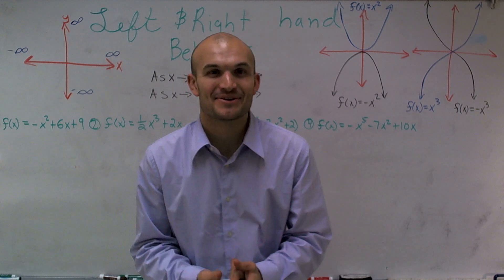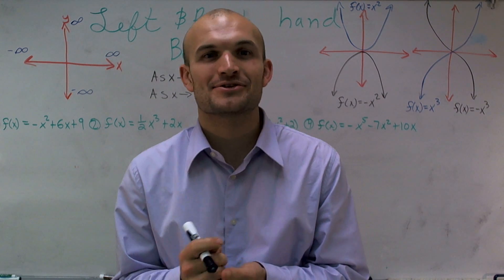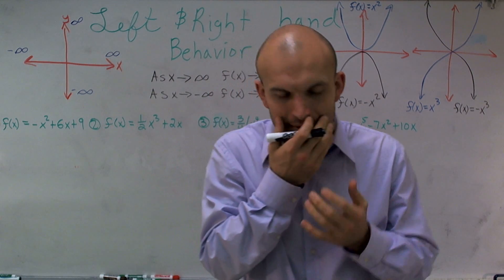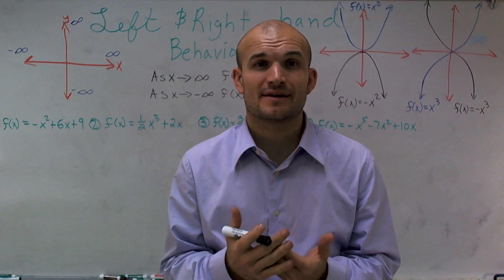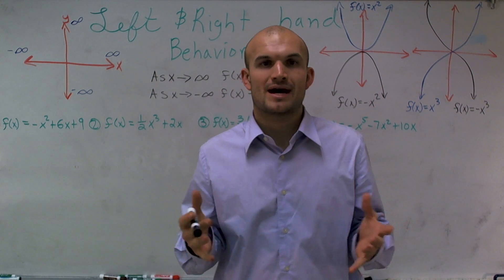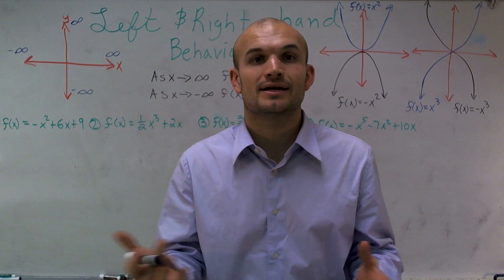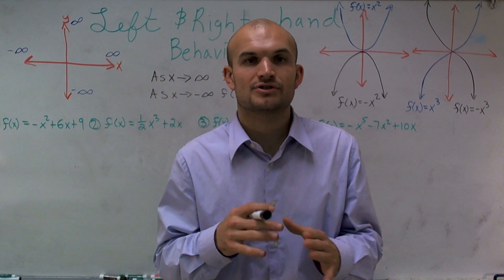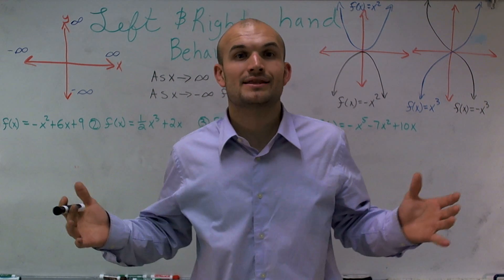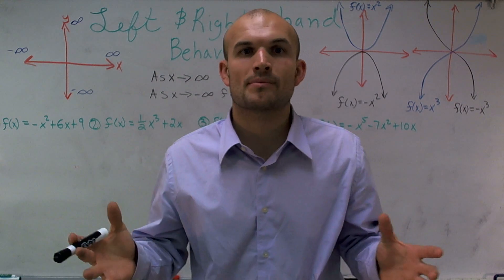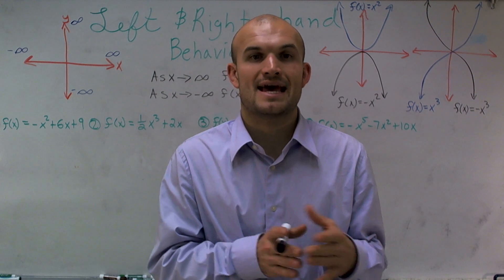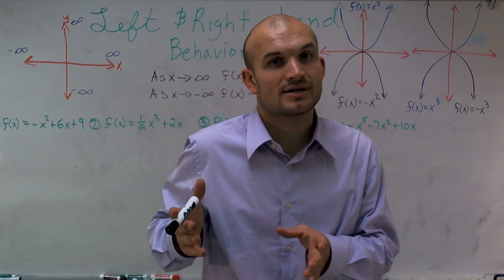Welcome to left and right side behavior of a graph. Today I want to show you how to find or determine the left and right hand behavior of a function. The reason why it's helpful is when you have a graph with a very high degree, it's often hard to determine where your graph is heading and what the graph even looks like. There are a couple of rules we can follow to find what is the end behavior of a graph — where it starts from and where it's heading to.